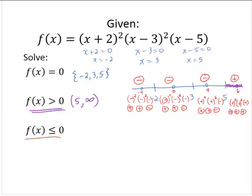Where is the function less than 0? It's less than 0 on all the parts where we got negatives. And it's equal to 0 at all of those boundary values — the solutions from the first part. So f of x is less than or equal to 0 on the interval negative infinity to 5, and we would bracket the 5.